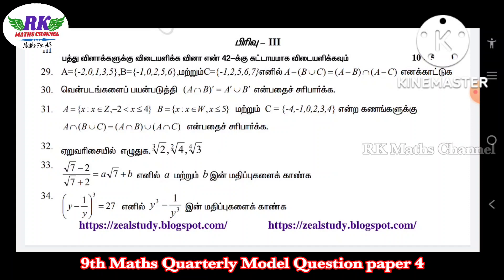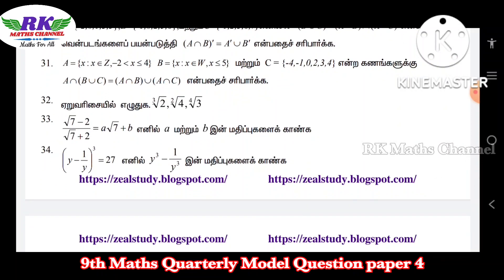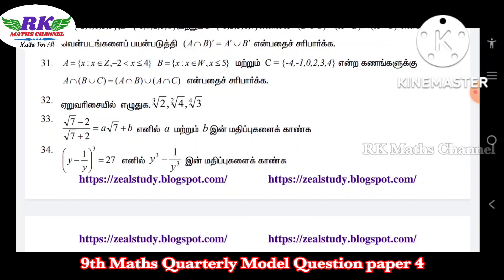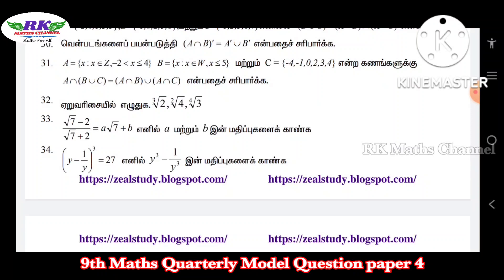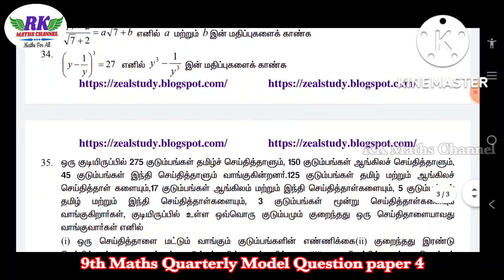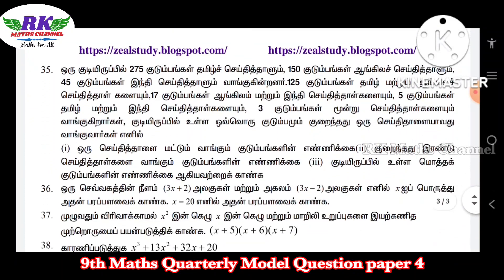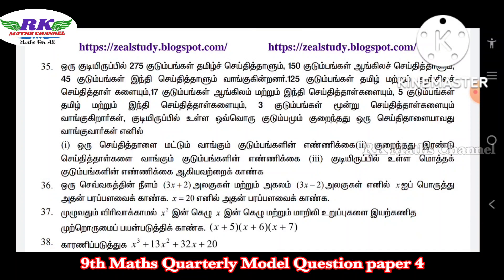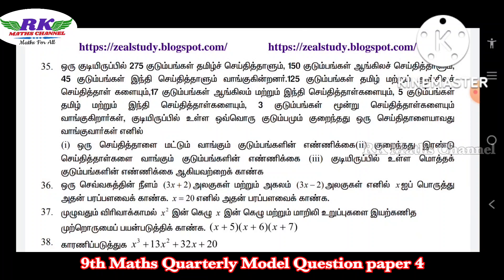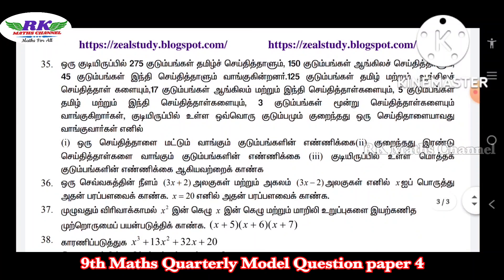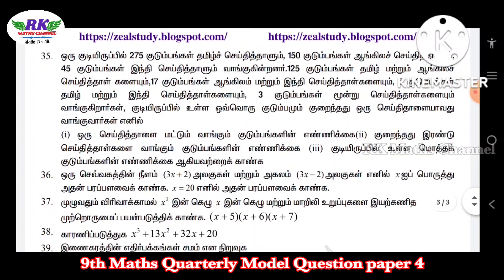Question number 33: rationalize the denominator — find the a value and b value, easy. Question number 34: y minus 1/y whole cube equals 27, find y cube minus 1/y cube — third chapter, important. Question number 35: I think this is first chapter — cardinal number of sets. That concept may not be available in the book; you will need to check the book or a Tamil or Hindi newspaper.